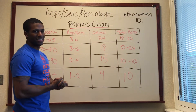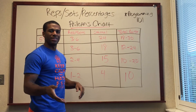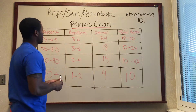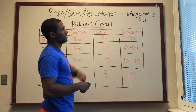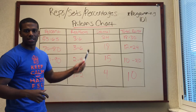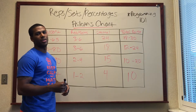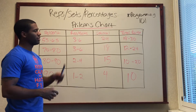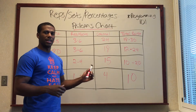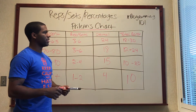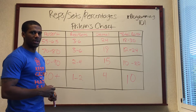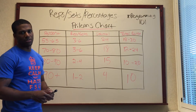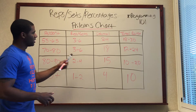Today starts my series on programming 101 and I'm going to talk about reps, sets, and percentages. This chart you can easily get online yourself, but I've got it right here on the board. It's a Prilepin chart. He was a Russian guy and they used this on Olympic weightlifters, but since I'm talking more on the powerlifting and average gym-goer side, it works fine.